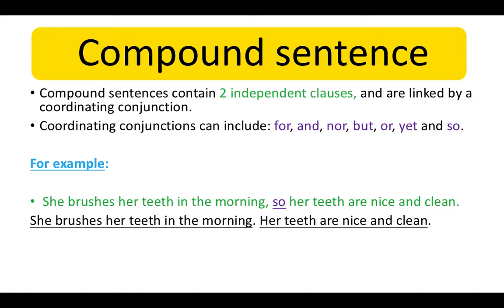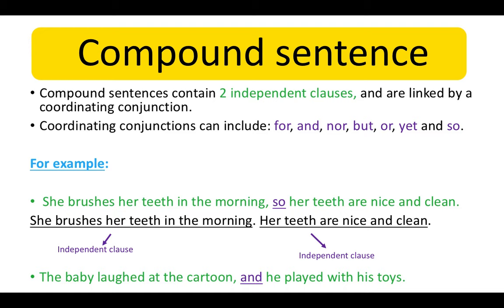Here we can see the sentence without the coordinating conjunction. We have two independent clauses that each make sense on their own as separate sentences. Another example: The baby laughed at the cartoon and he played with his toys. It's important to know that we use commas before the coordinating conjunction.